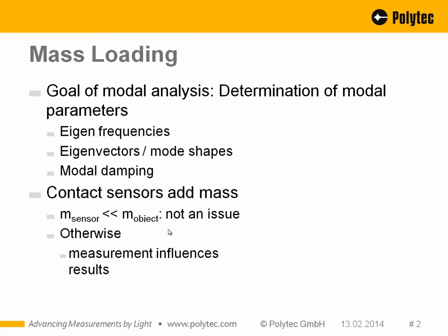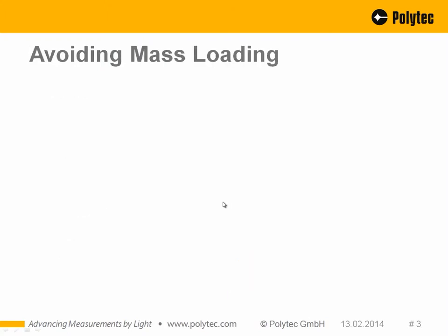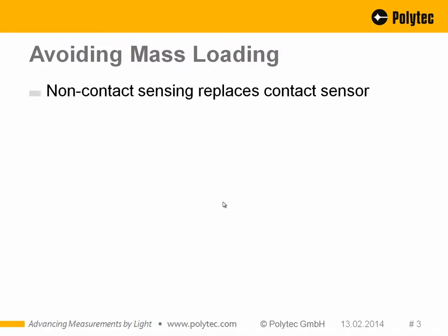But if this is not the case — for example with lightweight structures, membrane-like structures, or sheet metal structures in the car industry — we will feel this influence heavily. To understand why, look at the equation of motion: if you add mass, you change the mass matrix and get a different equation, so you get different results. If you want to avoid mass loading, the easiest thing to do is use non-contact sensing technologies.